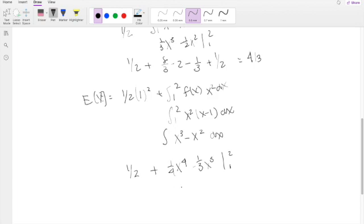This part is still 1/2. When you plug in the upper limit, you get 16/4, which is 4. You get 8/3 minus 1/4, plus the lower limit 1/3, plus 1/2 here. Don't forget. So this equals 23/12.